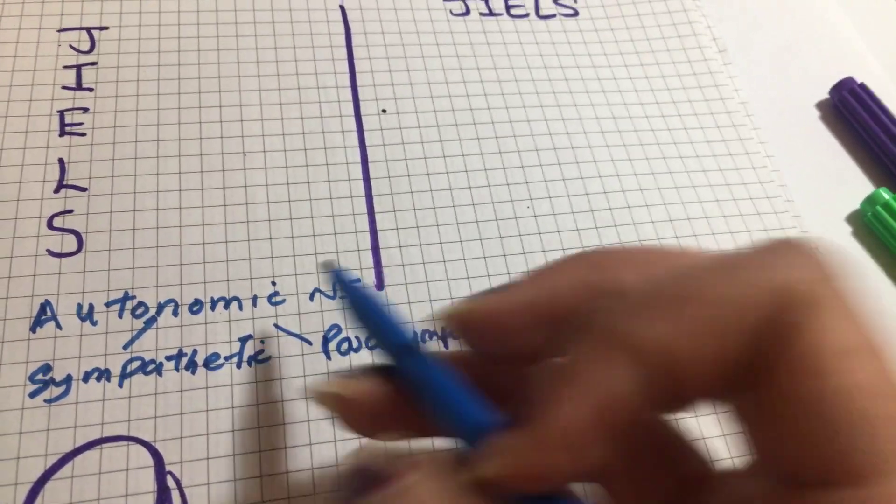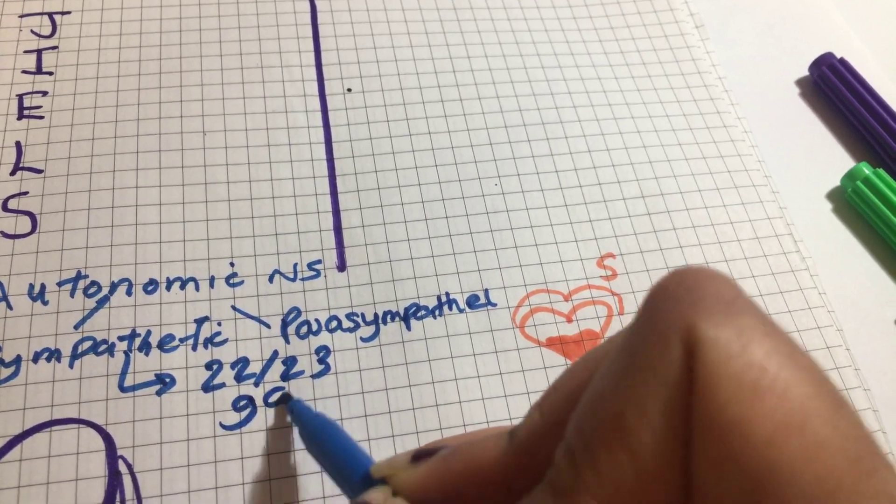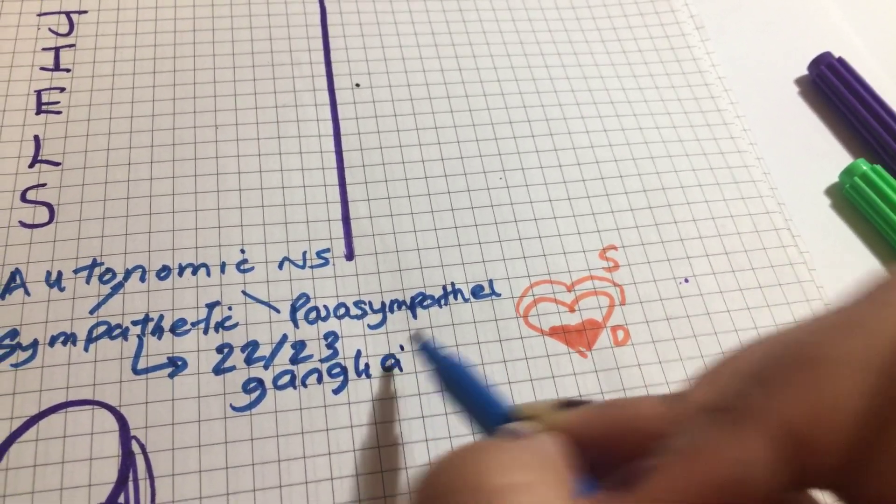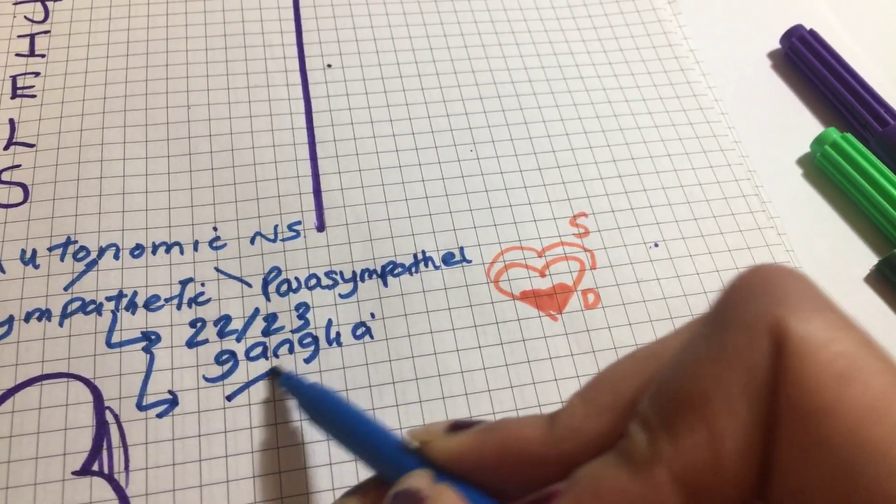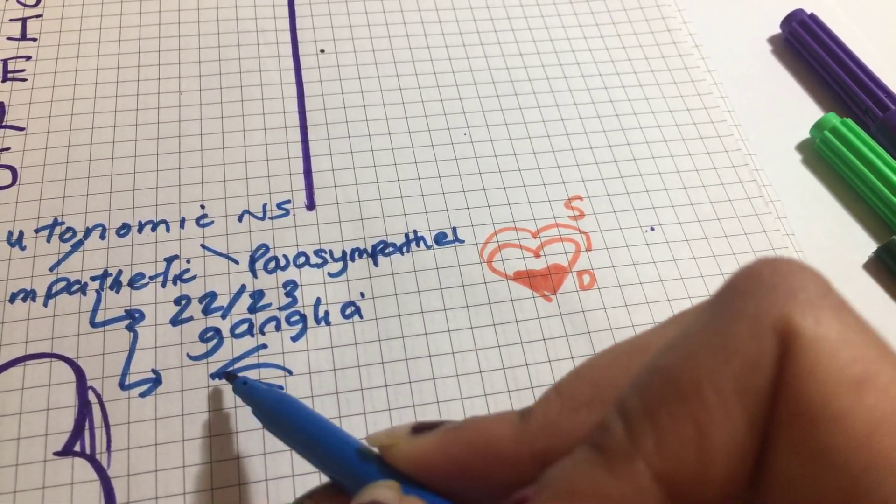The autonomic nervous system is composed of sympathetic and parasympathetic. Overall, within the sympathetic nervous system, we have 22 to 23 ganglia. These can be divided into a cervical region, thoracic region, lumbar region, and a sacral region.